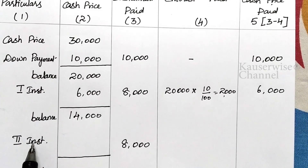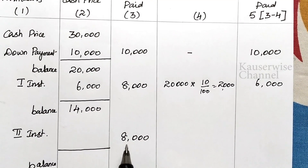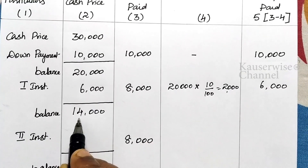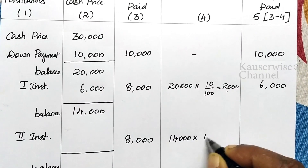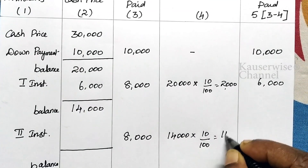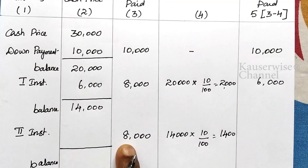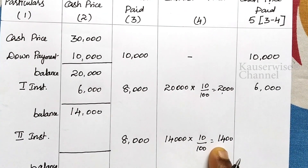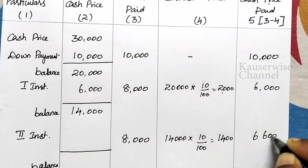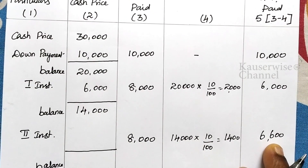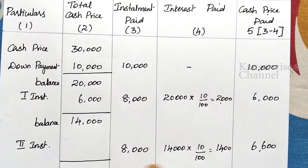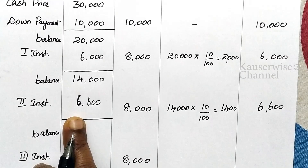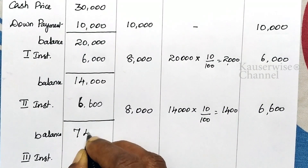In the second installment, the same process applies. After the first installment, the balance is 14,000. So interest = 14,000 × 10% = 1,400 rupees. The second installment is 8,000 inclusive of interest plus cash price. So cash price = 8,000 − 1,400 = 6,600 rupees. Cash price 6,600 plus interest 1,400 equals 8,000 installment. Subtract 6,600 from the cash price balance: remaining balance is 7,400.